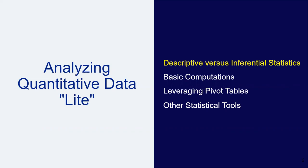Quantitative data are used when a researcher is trying to quantify a problem or address the 'what' or 'how many' aspects of a research question. It is data that can either be counted or compared on a numeric scale. Conversely, qualitative data describes qualities or characteristics, and most typically you'll find it appearing in a narrative form.